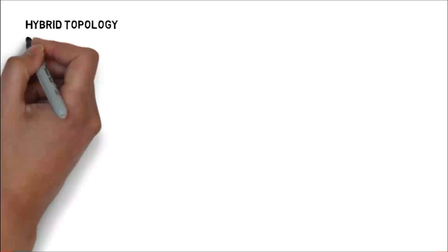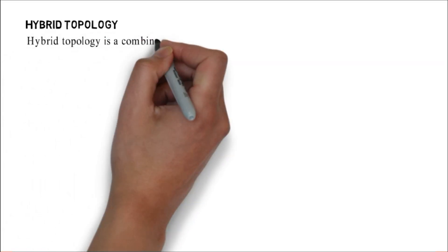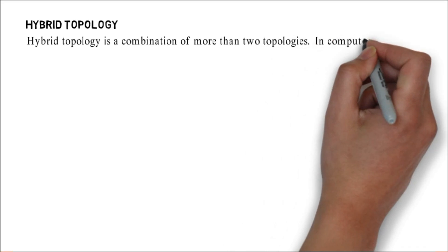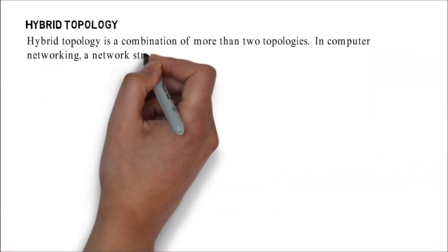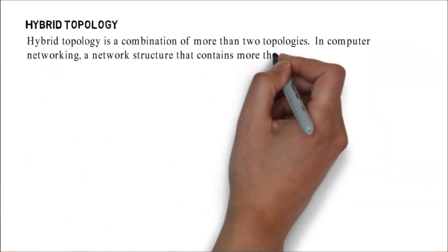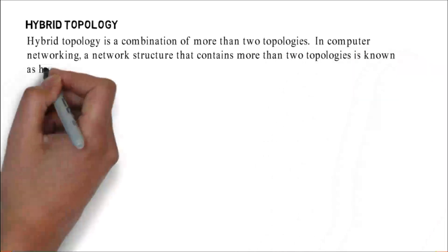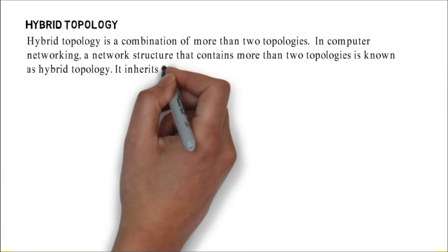Hybrid topology. Hybrid topology is a combination of more than two topologies. In computer networking, a network structure that contains more than two topologies is known as hybrid topology. It inherits the advantages and disadvantages of included topologies.